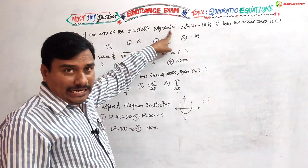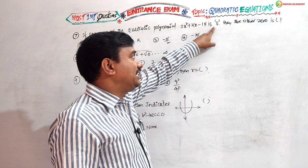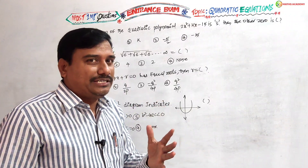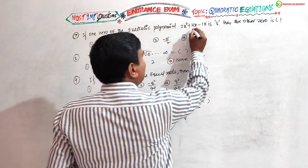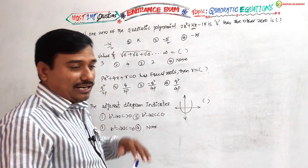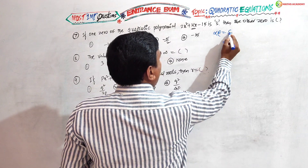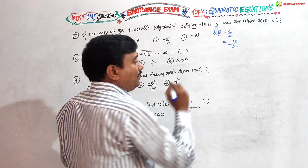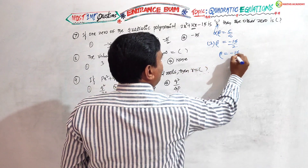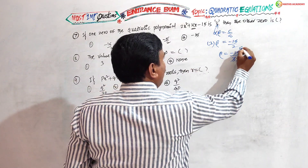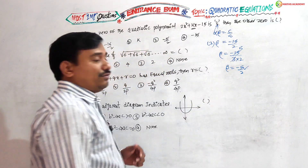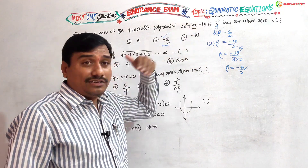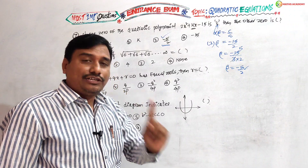Seventh question: if one zero of the quadratic polynomial 2x squared plus kx minus 15 is 3, find the other root. Here we use alpha times beta equals c by a, which is minus 15 by 2. One root alpha is 3. So 3 times beta equals minus 15 by 2. Beta equals minus 5 by 2. We use product of roots here because another variable k is present, so alpha times beta is the better approach.